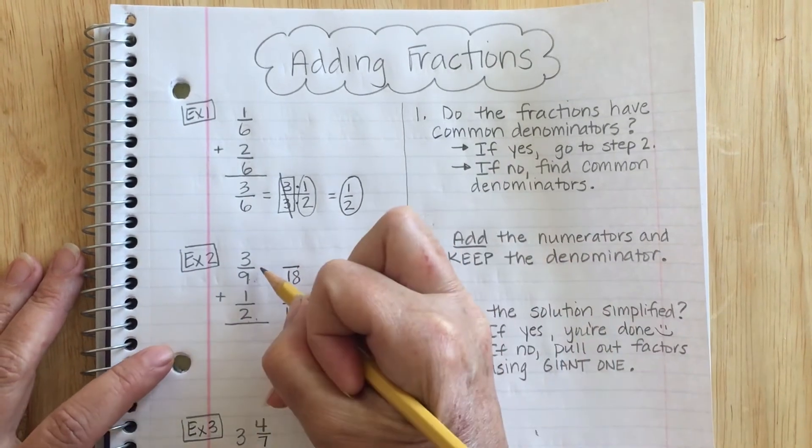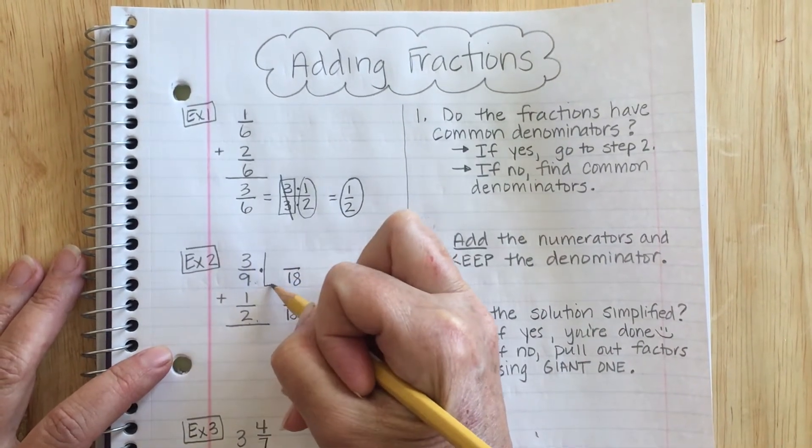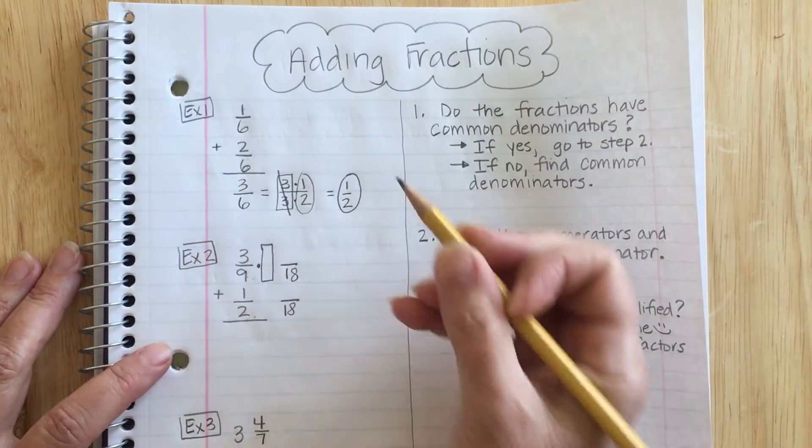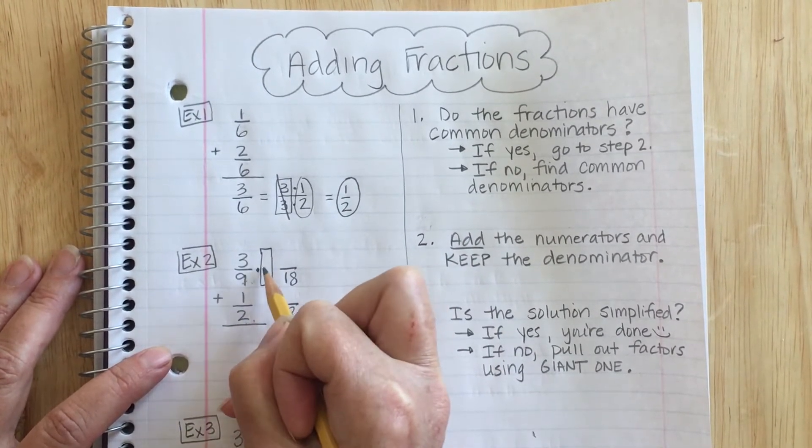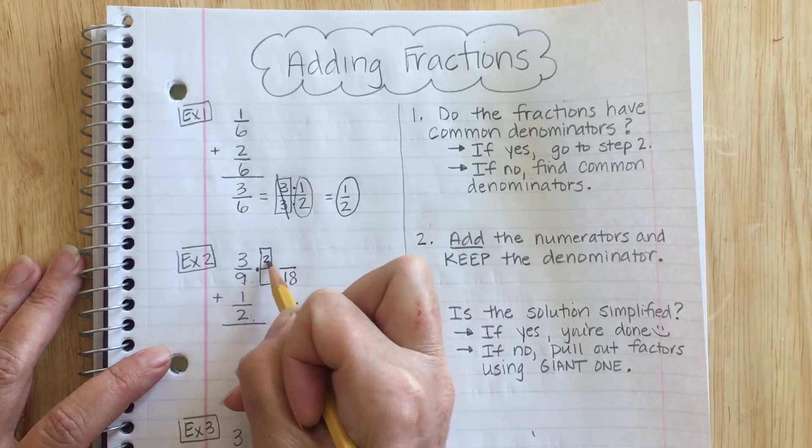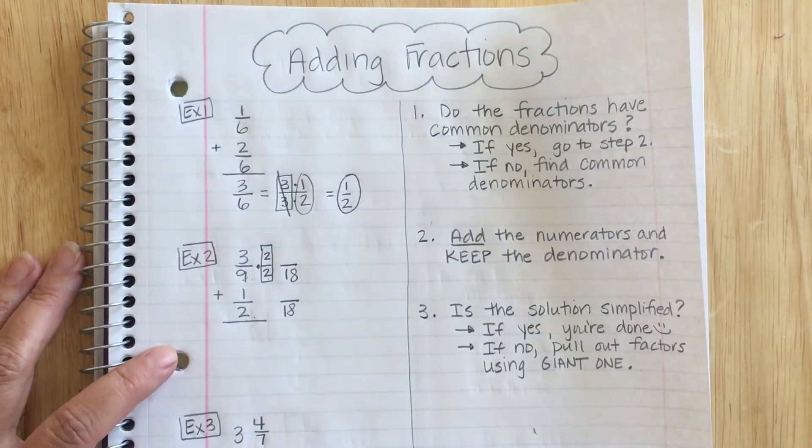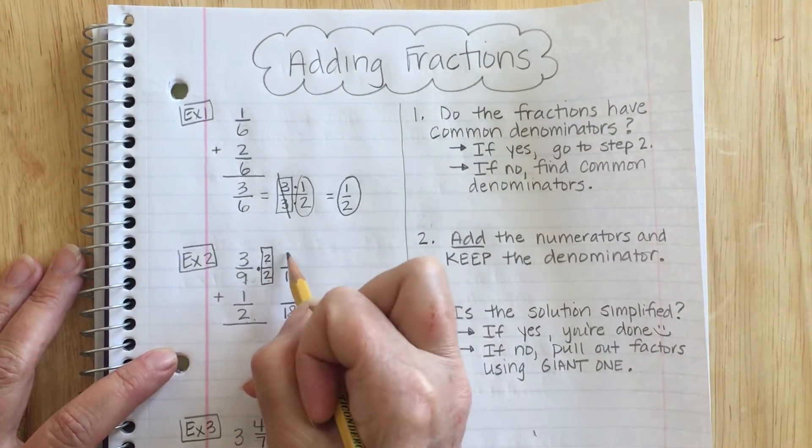Now I'm going to use my giant 1 to make equivalent fractions. I know that 9 times something is 18. So that means 9 times 2. I'm going to write my giant 1 as 2/2. Then 3 times 2 is 6.